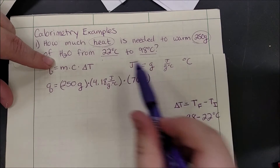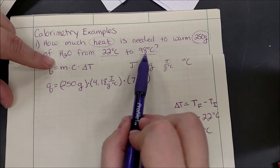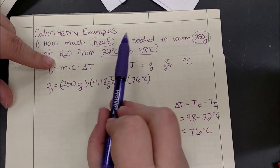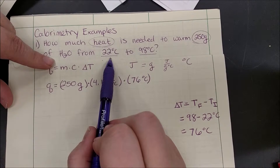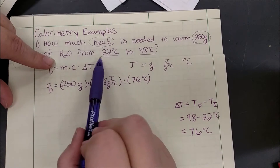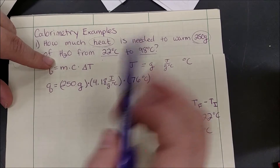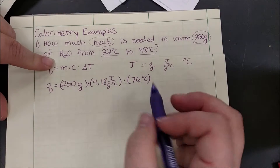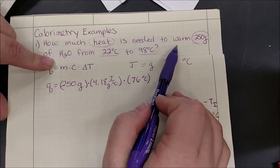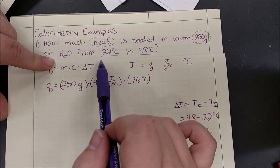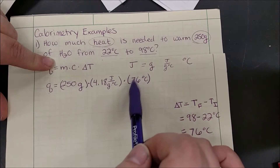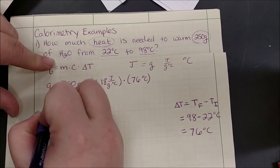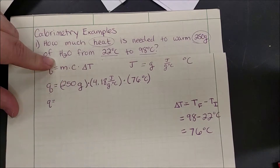It is always important to remember it's not just the big number minus the small number — it is final minus initial. When it says the sample is cooled or the temperature is going down, you should get a negative number for your change in temperature.